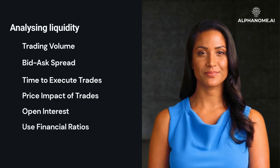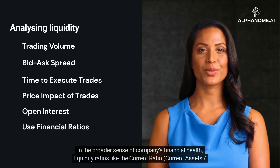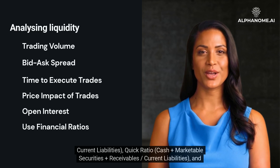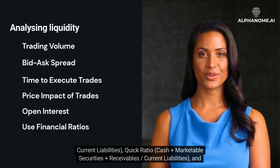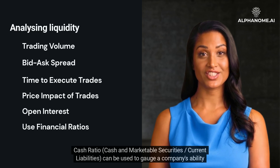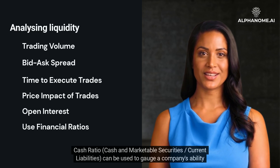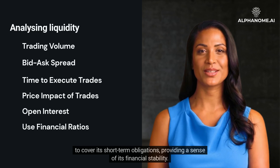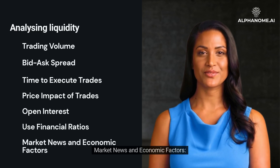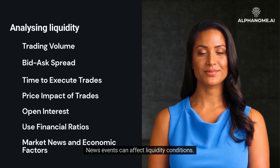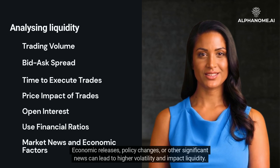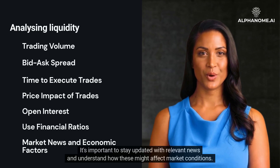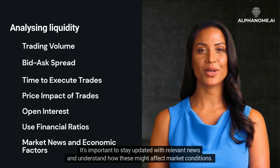Use Financial Ratios: In the broader sense of a company's financial health, liquidity ratios like the current ratio (current assets divided by current liabilities), the quick ratio (cash plus marketable securities plus receivables divided by current liabilities), and the cash ratio (cash and marketable securities divided by current liabilities) can be used to gauge a company's ability to cover its short-term obligations, providing a sense of its financial stability. Market News and Economic Factors: News events can affect liquidity conditions. Economic releases, policy changes, or other significant news can lead to higher volatility and impact liquidity. It's important to stay updated with relevant news and understand how these might affect market conditions.